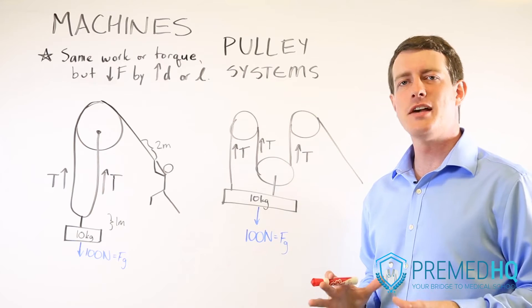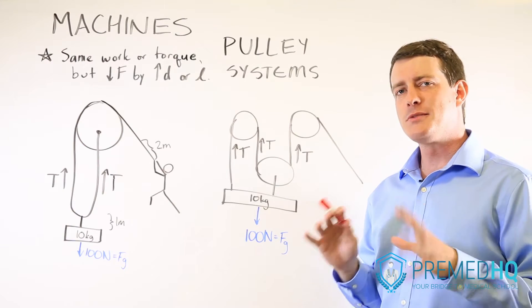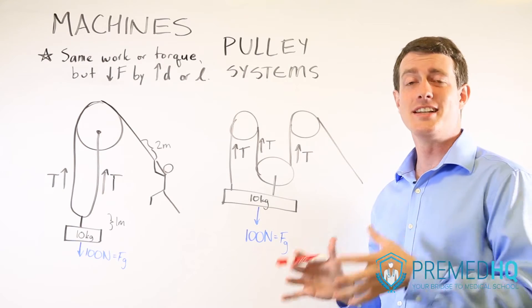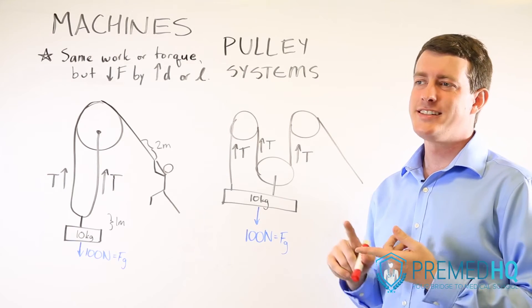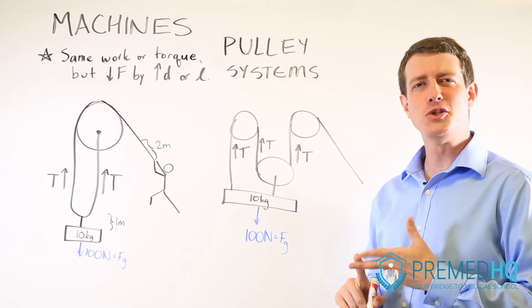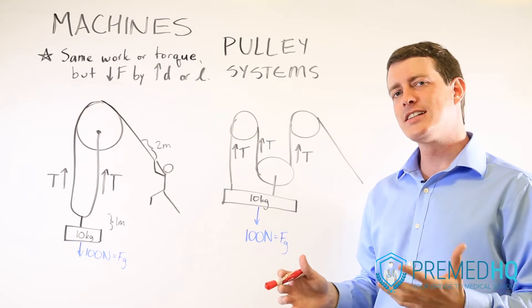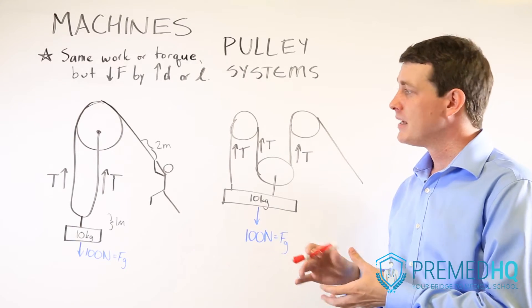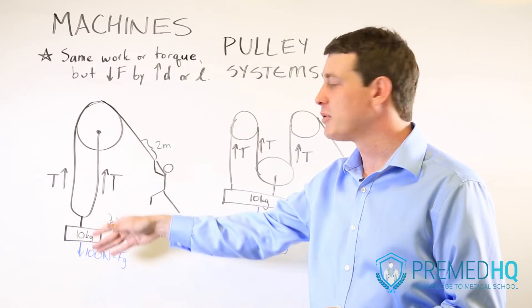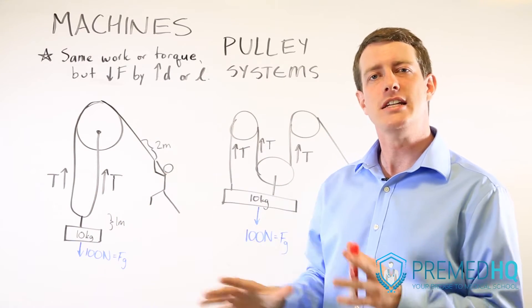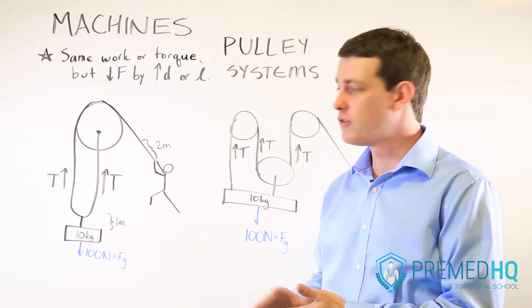A pulley system is another type of machine that operates based on a principle that's somewhat unique about the tension force. Tension and friction are the two forces that don't really have a direction but instead exist to pull against something. So tension doesn't normally go up or down except when it needs to be fighting some other force.